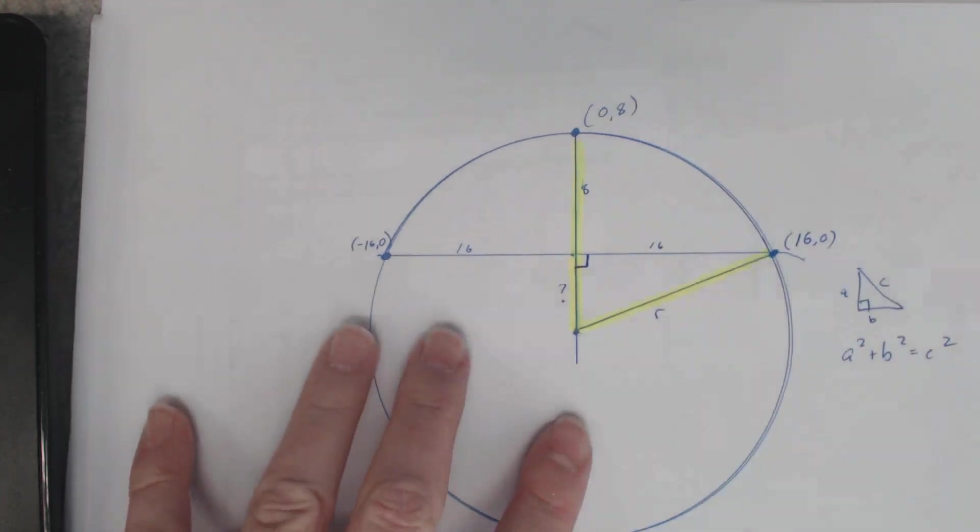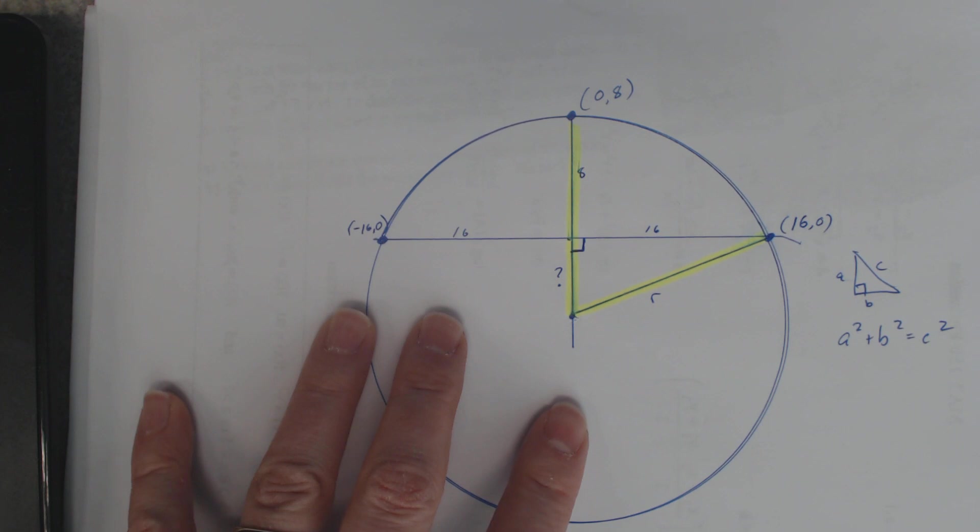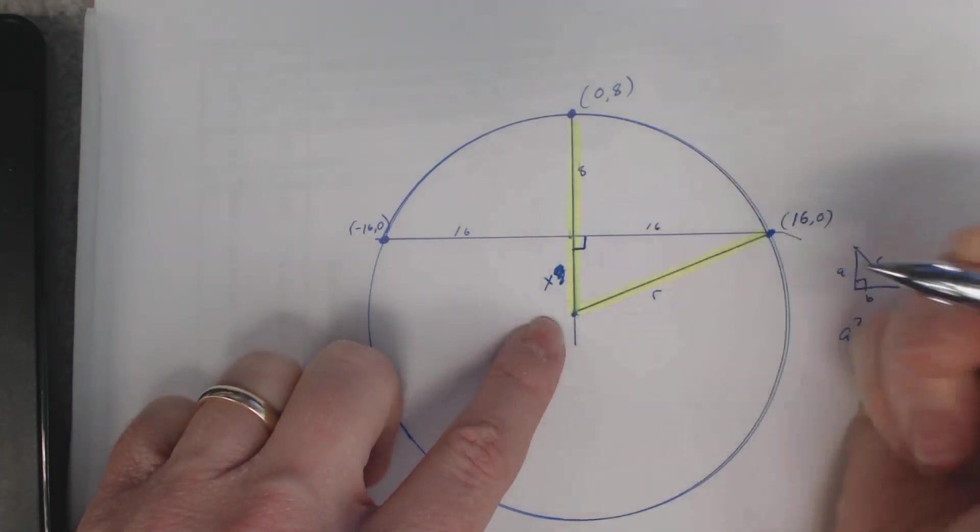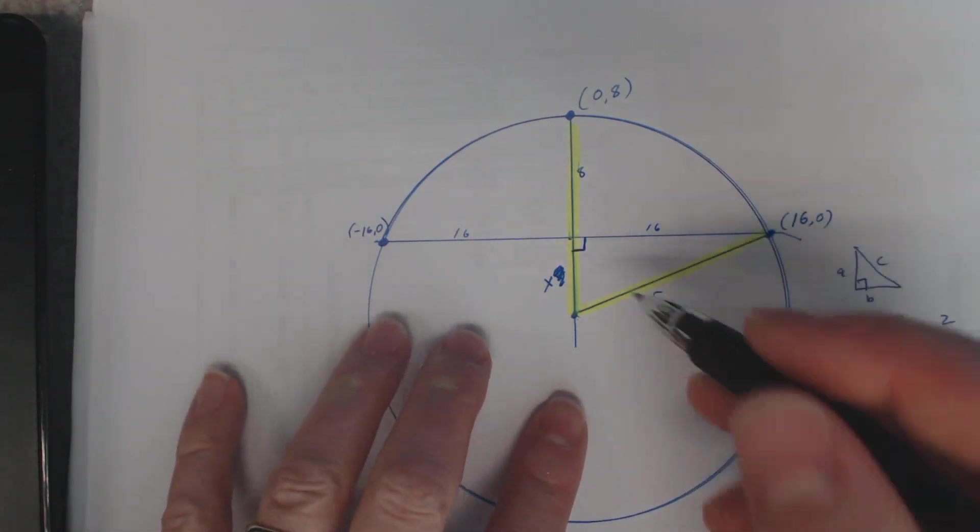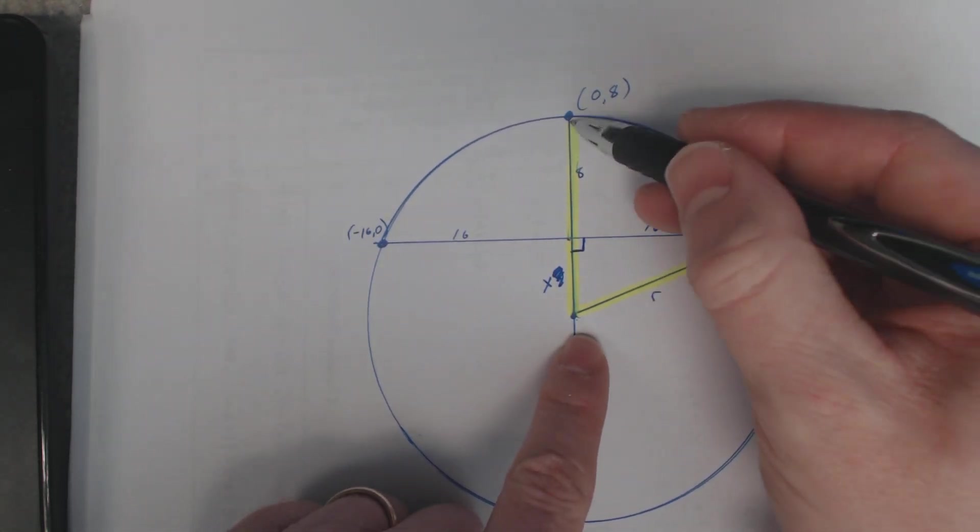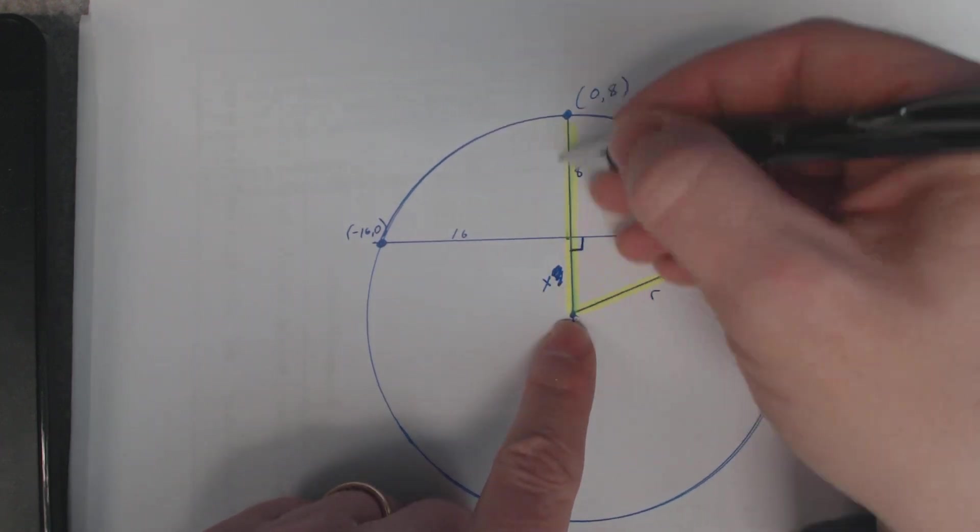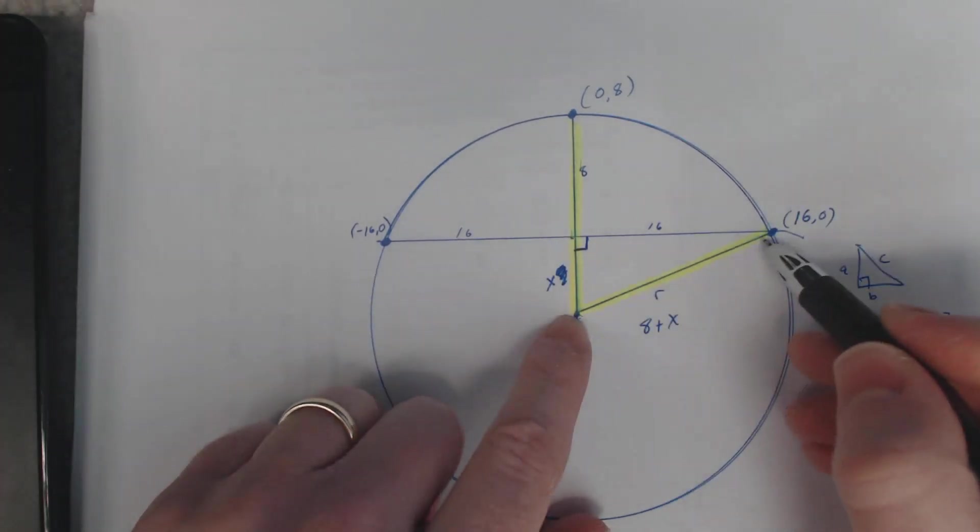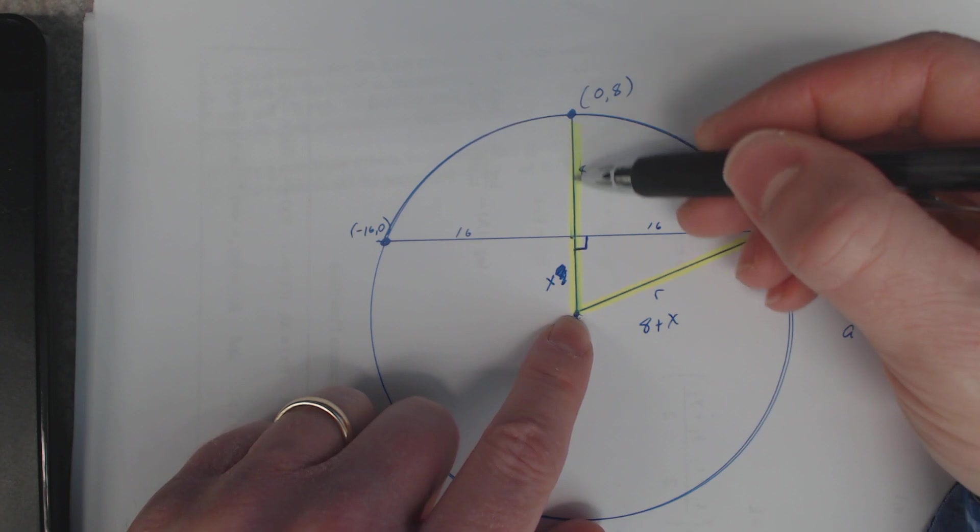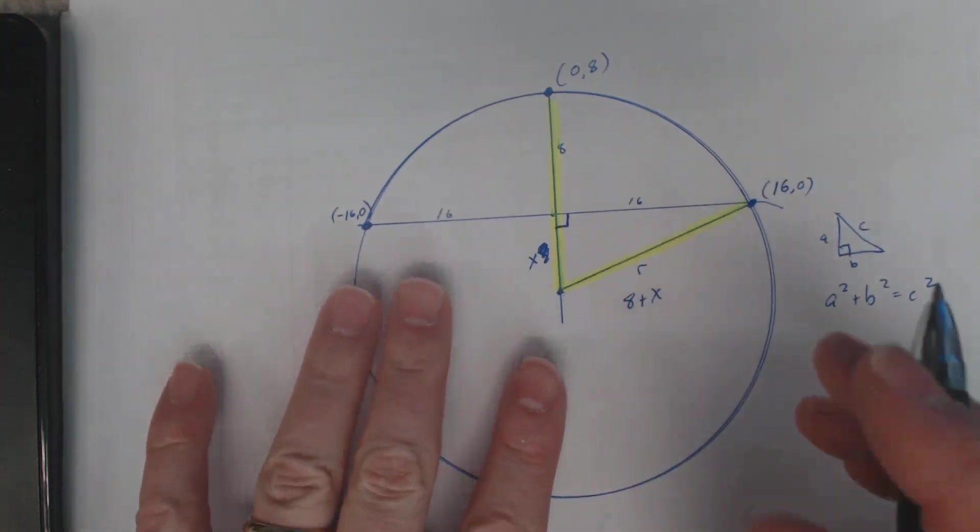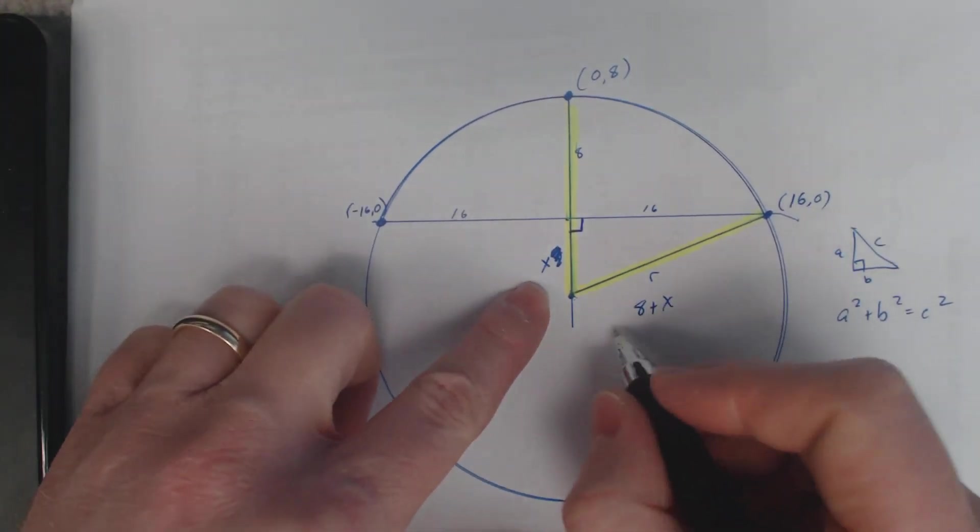So instead of a question mark, instead of the question mark, I'm going to put an x there. I really don't know this value, so we'll put an x there. I know that side over there is 16. Well check this out - this whole side here would be 8 plus x. So this is the same as this, so this side over here is actually 8 plus x. This radius is the same as this radius, and this radius here is 8 feet plus x many feet - we don't know what that is, so it's 8 plus x. And that's where the key of the problem lies.